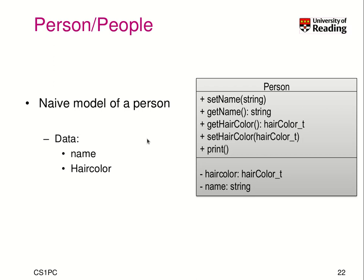Let's model person and people. We have a very naive model of a person with data: a name and a hair color. We put them as private members and create accessors — getters and setters — so we can set the name, get the hair color, and change those variables.